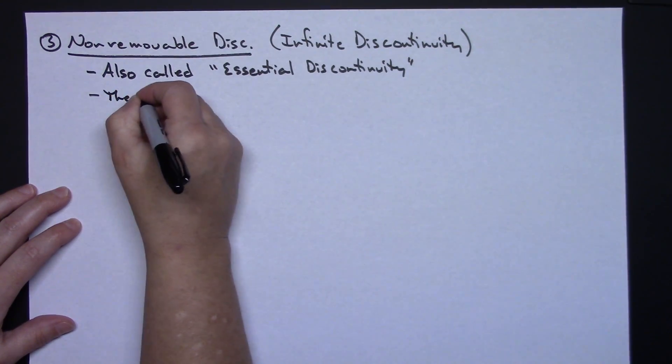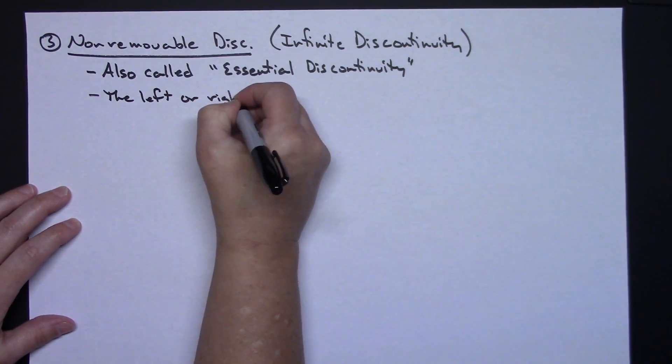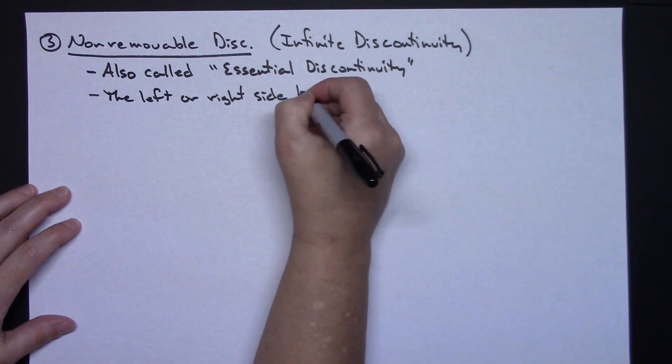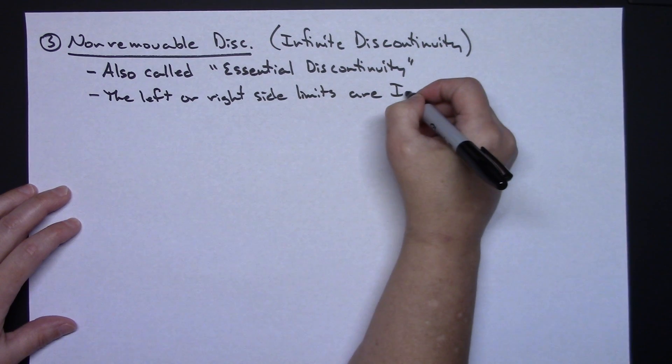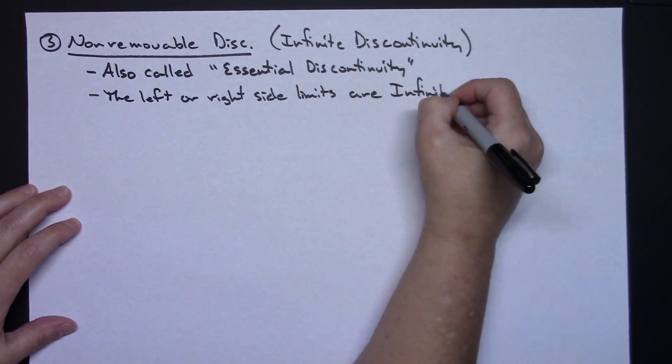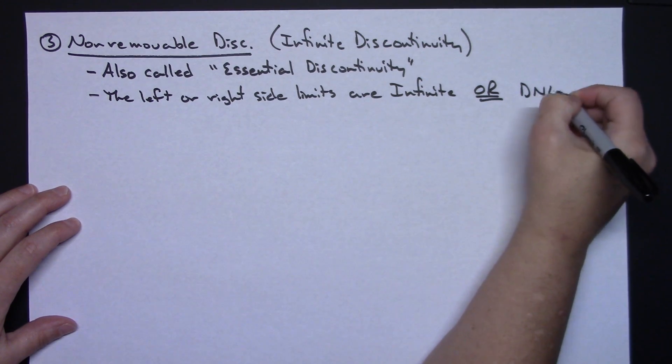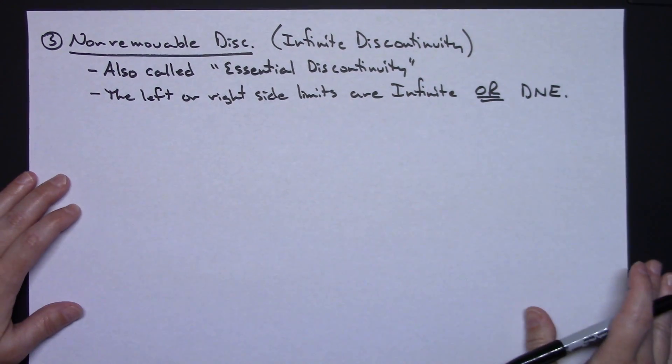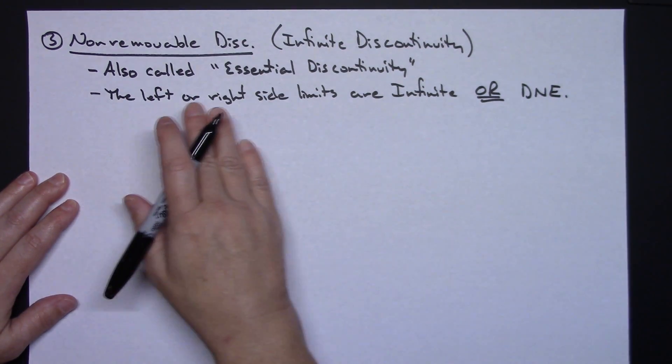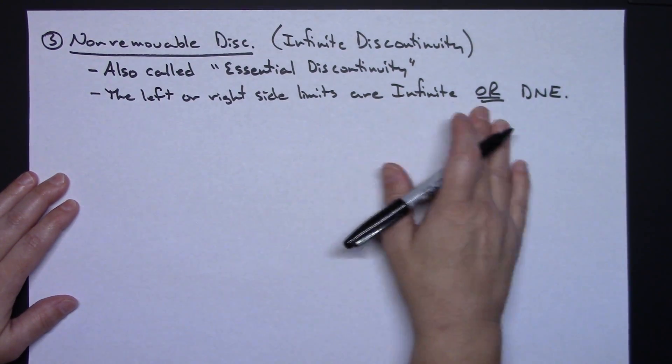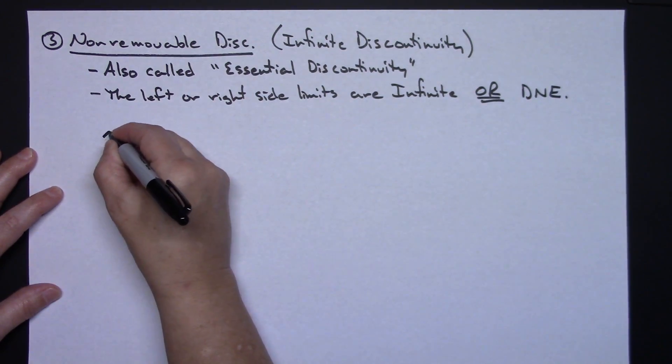The left or right side limits are infinite or they do not exist. So that's going to be what's going to classify this and let you know it's an infinite discontinuity. Either the left or the right side limits are infinite or they don't exist. So some different scenarios that we can encounter here.